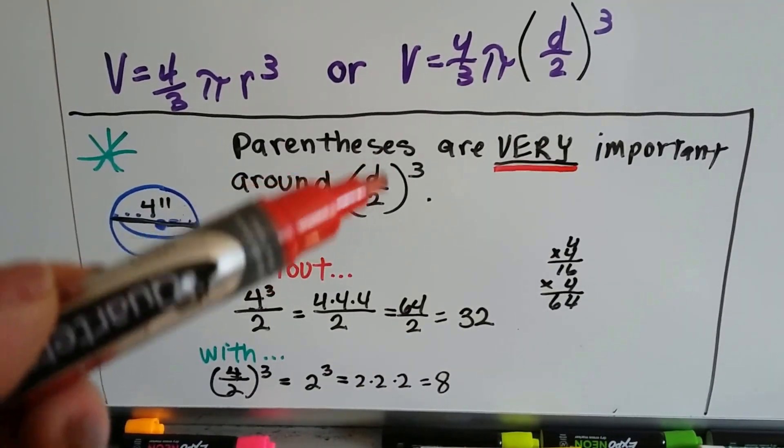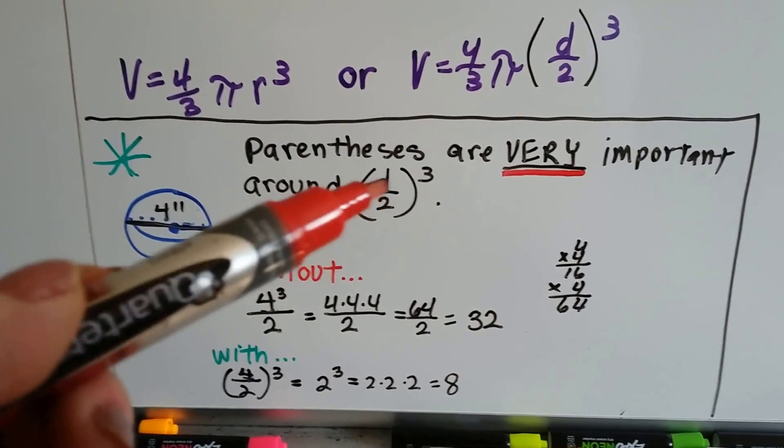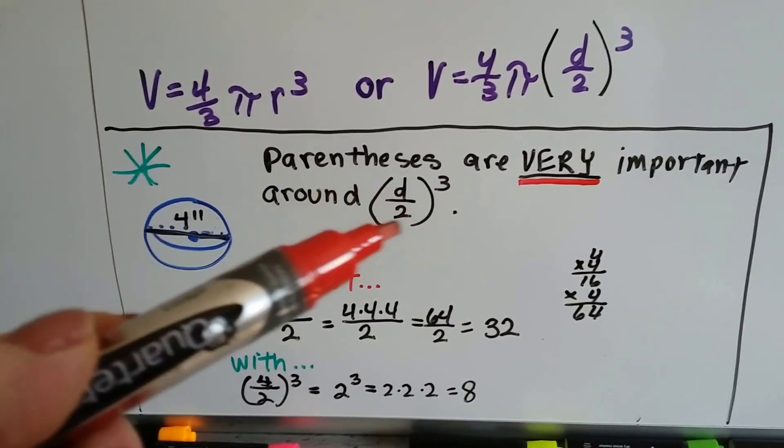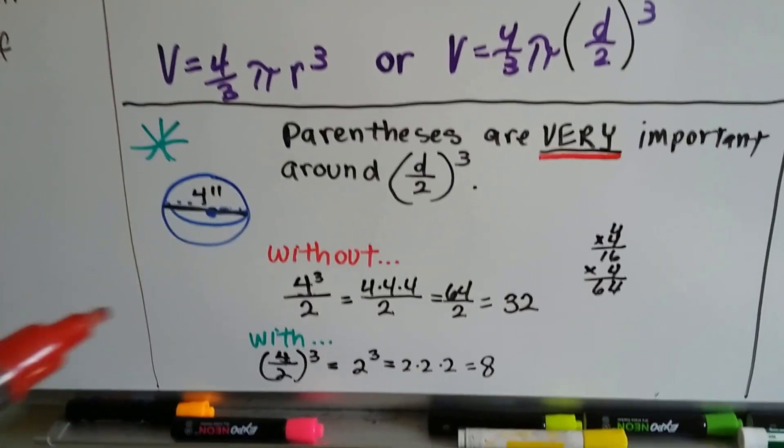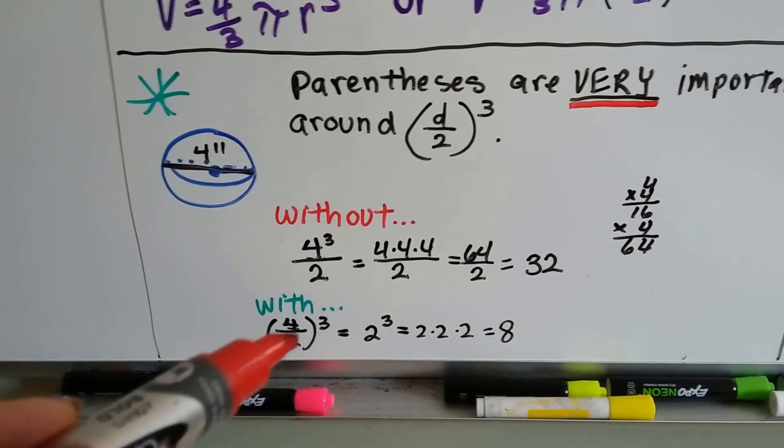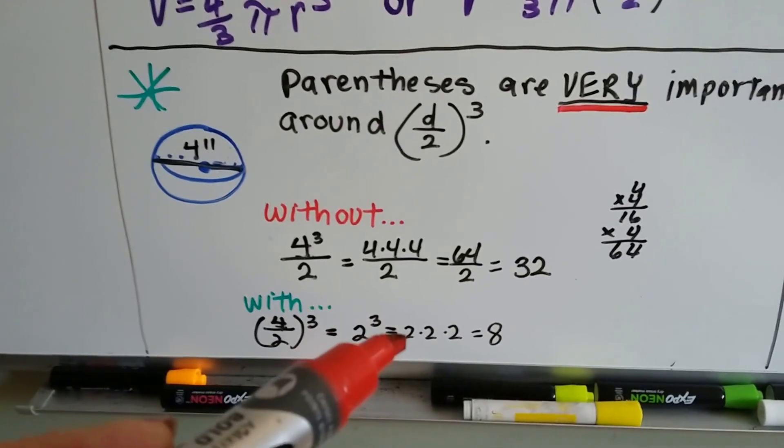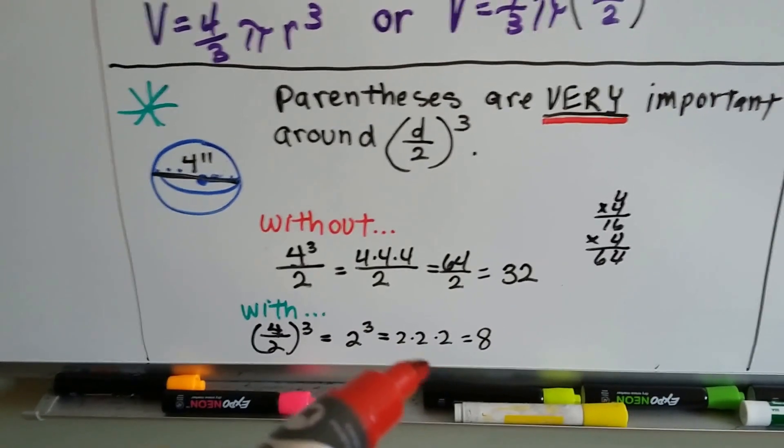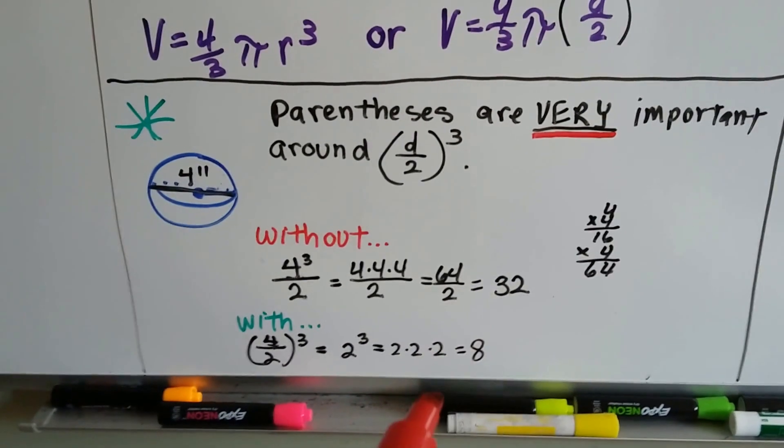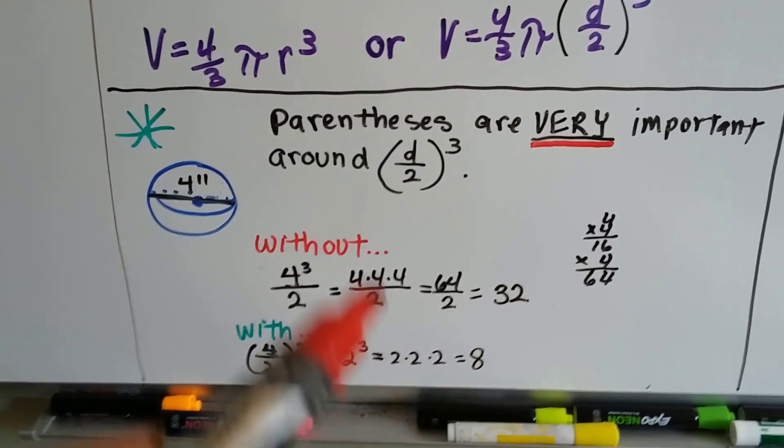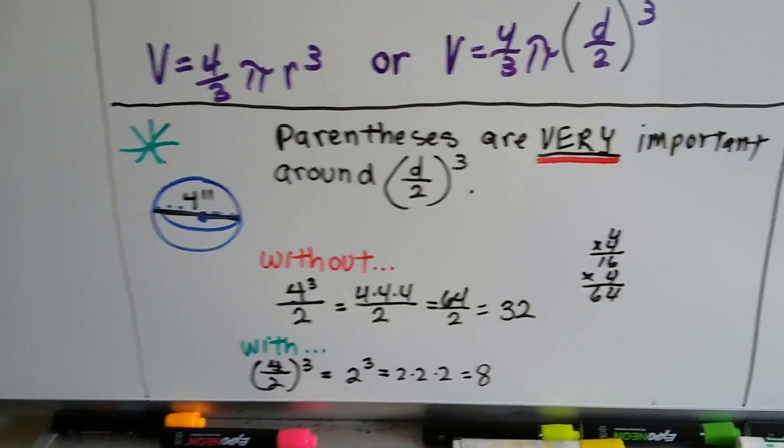If it's in parentheses, that means divide first, because you always do what's in parentheses first with order of operations. So if we have a diameter of 4, we divide it by 2 and get a 2. Now we cube it: 2 times 2 times 2. 2 times 2 is 4 times 2 is 8. Huge difference - 32 compared to 8. That's why those parentheses are so important.